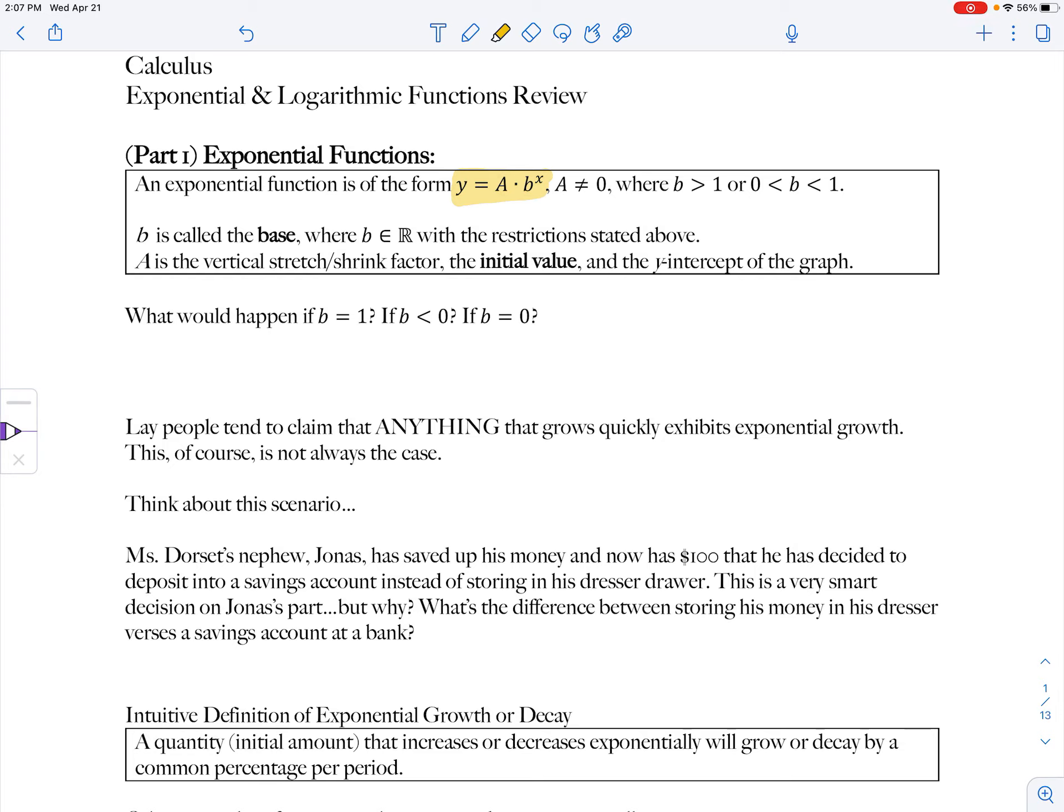And then there's some more restrictions on what the base b is. b needs to be strictly greater than one, or b needs to be between zero and one. b is called the base, where b is a real number that has the above restrictions. And we'll talk about why we have to have those restrictions in just a second.